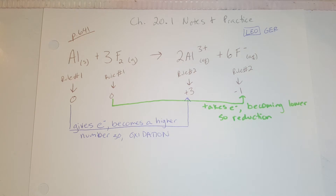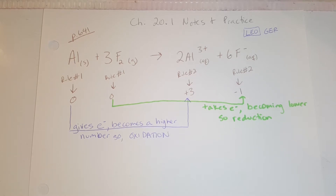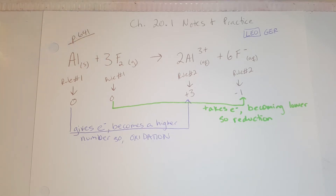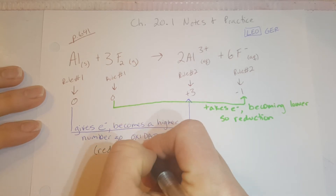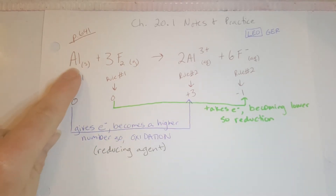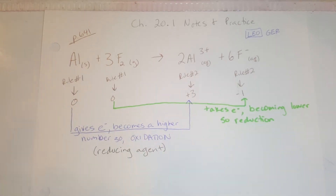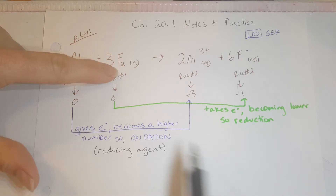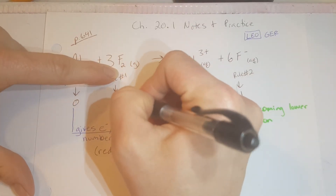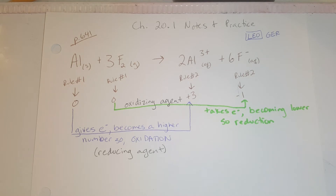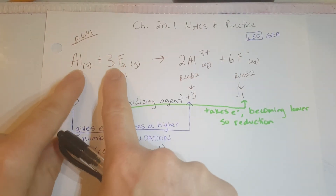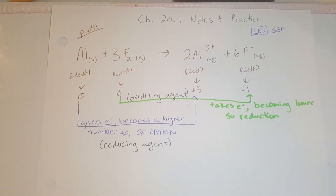There's a part in your book that talks about oxidizing agent and reducing agent — it's basically the opposite of whatever the substance is doing. Since aluminum is undergoing oxidation, it is the reducing agent, meaning it's the thing allowing fluorine to undergo reduction. Since fluorine is undergoing reduction, it is the oxidizing agent. When you're talking about the oxidizing or reducing agent, you're talking about which reactant is causing the other substance to undergo that process.